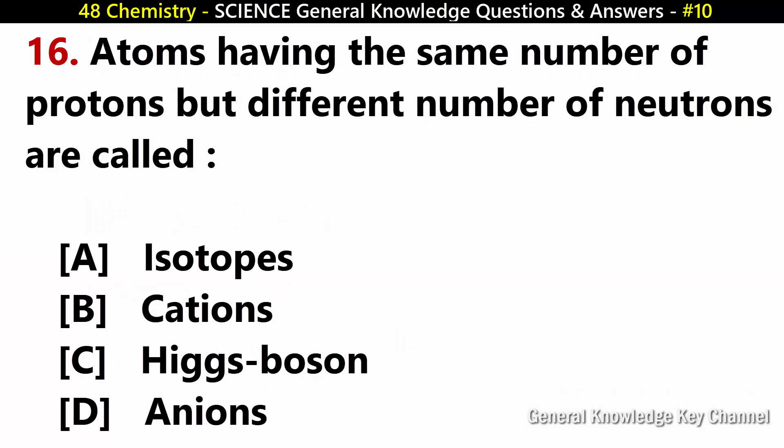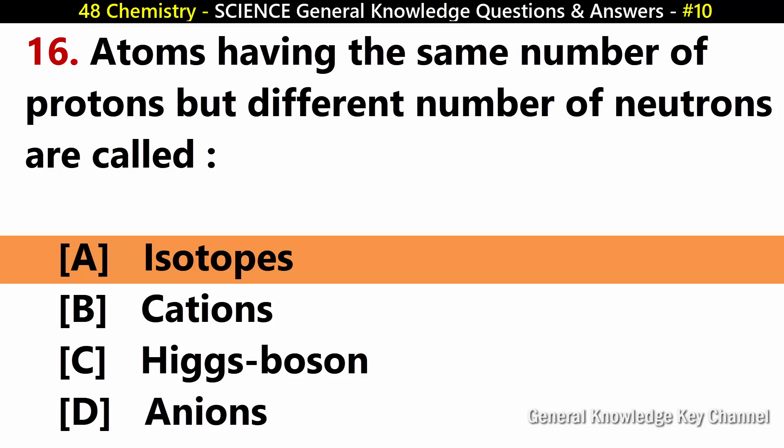Atoms having the same number of protons but different number of neutrons are called? Answer A: Isotopes.